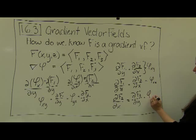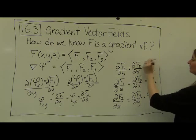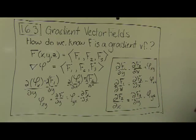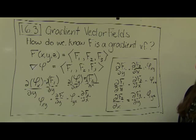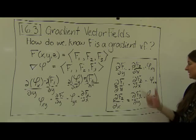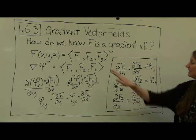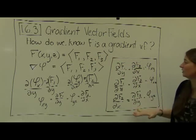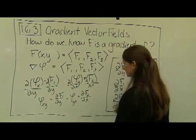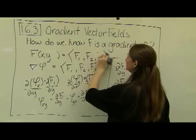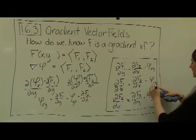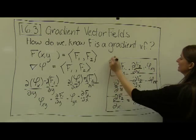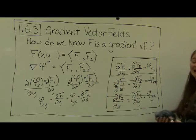If all of these conditions are equal, we know the function is a gradient vector field. If any one fails, it is not. For a function of just x and y, we only need one check — that the mixed partials of the two component functions are equal to one another — which is a really quick and easy check.